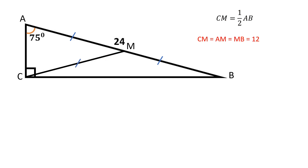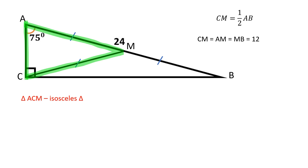Segments CM, AM, and MB are congruent and equal to 12. Triangle ACM is an isosceles triangle.